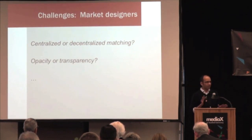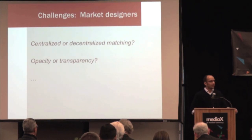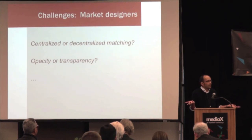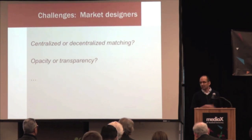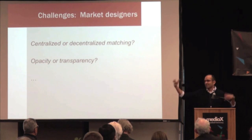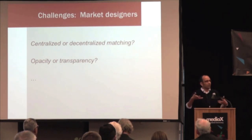I want to run through challenges for both the market designer and the market participant. Two challenges for the market designer I wanted to focus on are the nature of matching and the nature of information. When I say centralized or decentralized matching, I mean how much should you intervene in the matches that take place? If you've used Uber, you know you pull up the app, say you'd like a car, and they send one — you don't see a list of ten drivers to choose from or the ten nearest cars. There's essentially no choice other than 'I would like a car.' That's a very centralized marketplace — they're engineering almost the entire matching process between you and the person who picks you up.